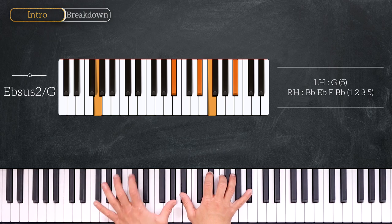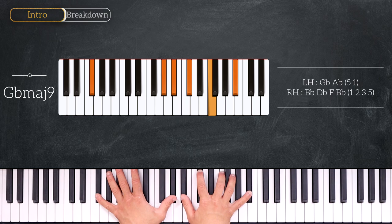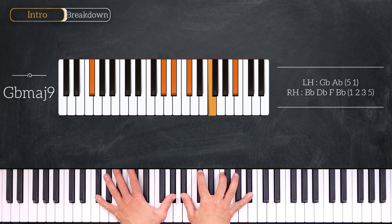Right after we will play this Gb major 9. So we have Gb and Ab on the left hand and Bb, Db, F and Bb on the right hand. And here we are on the 6th degree of the scale, so we can remember.